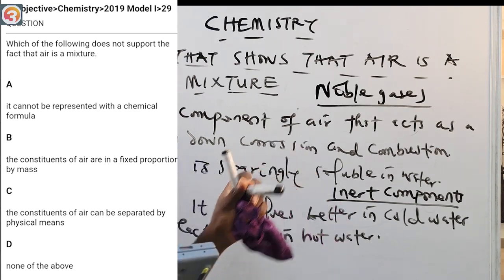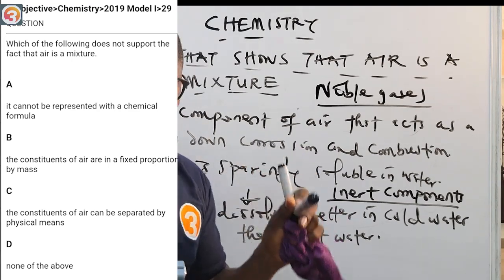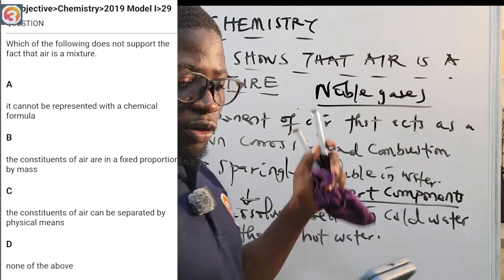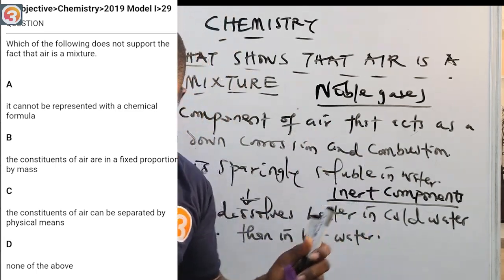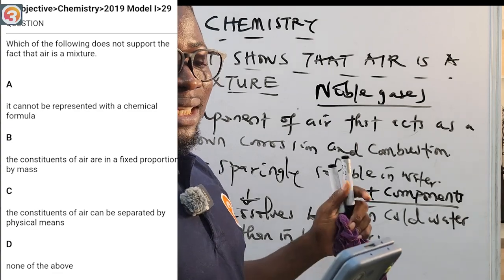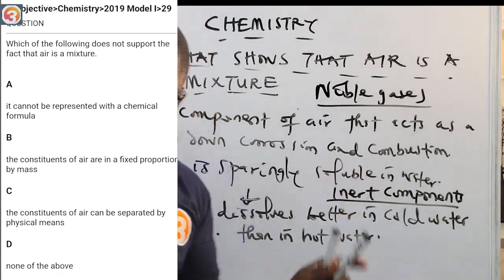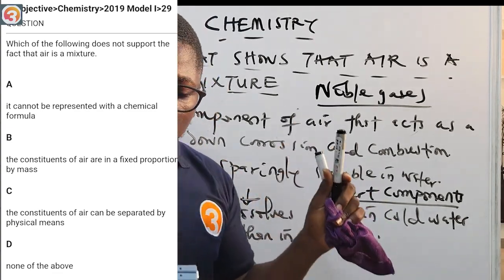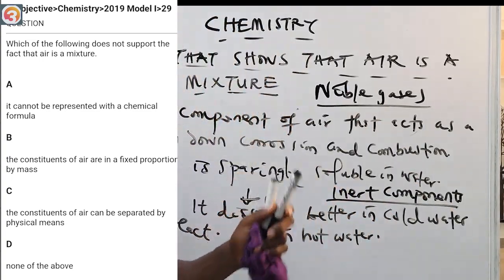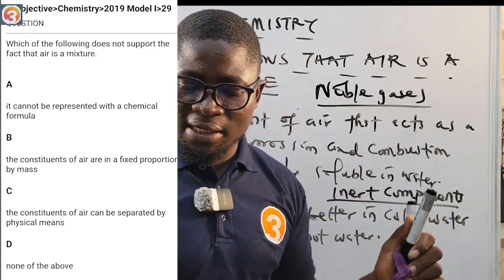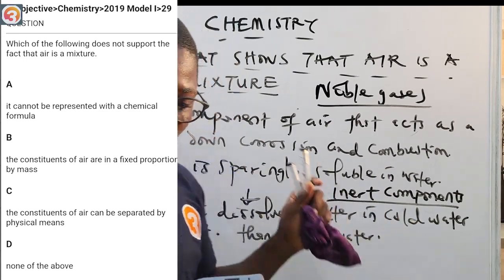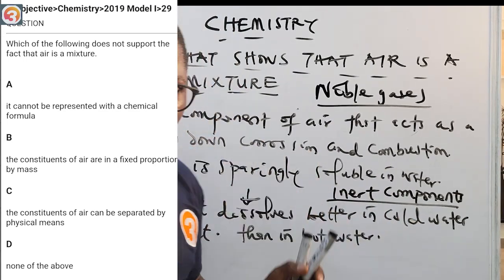Option B says the constituents of air are in a fixed proportion by mass. Option C says the constituents of air can be separated by physical means. A is correct (it cannot be represented by a chemical formula), C is correct (components can be separated by physical means), but B is wrong.